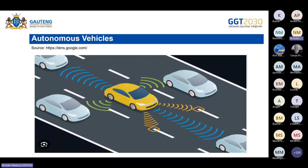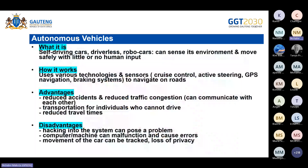Looking at the diagram showing vehicles with sensors detecting surrounding cars and road markings: what is an autonomous vehicle? They are self-driving cars, also called driverless or robot cars. They are able to sense their environment and move safely with little or no human input.